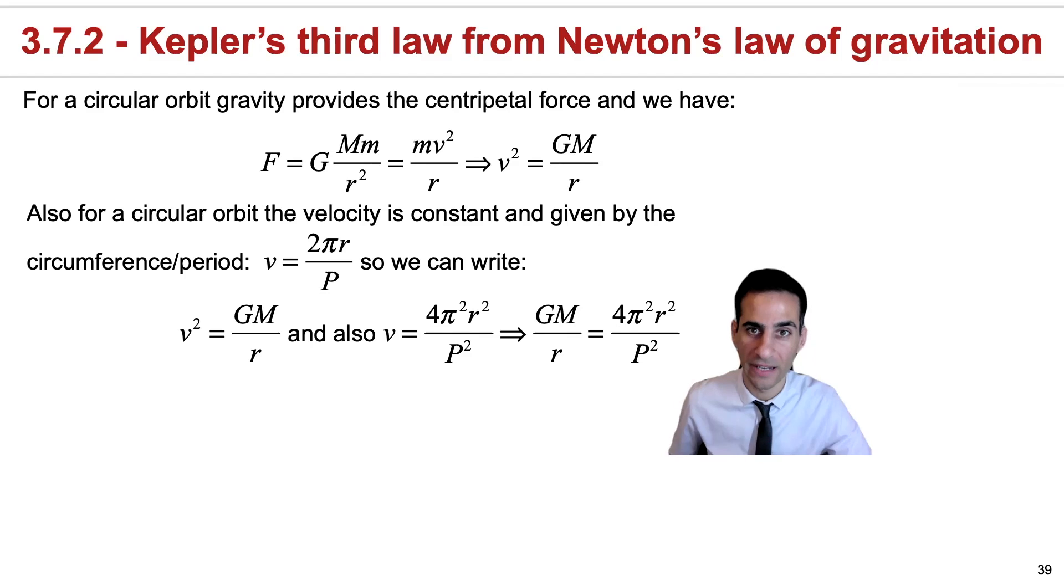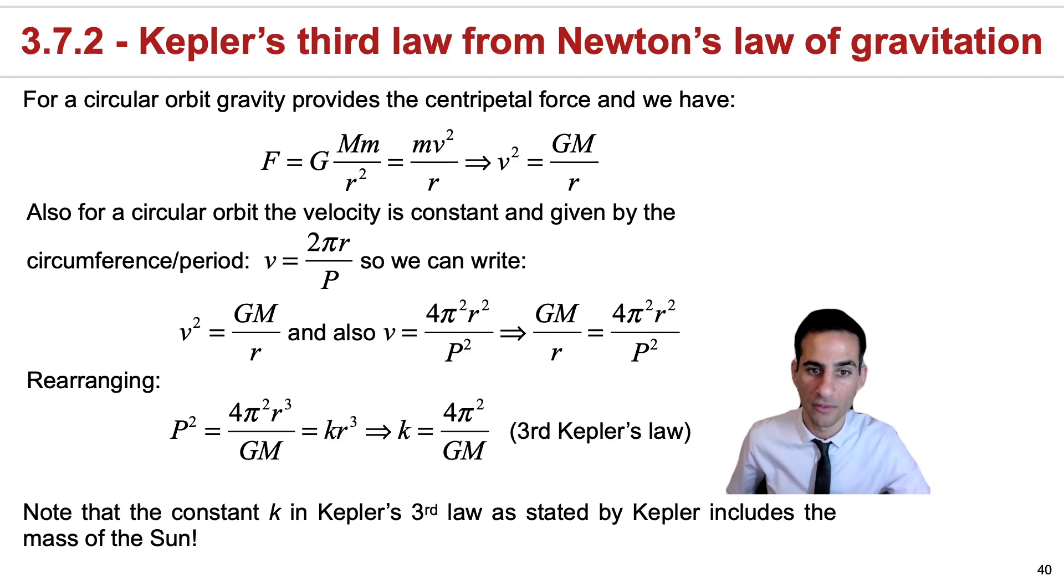You can see you have P squared over here, you have r squared then you have r so you can actually manipulate the expression to finally find Kepler's third law and identify this actual constant in Kepler's third law which actually contains big M, it contains the mass of the sun.